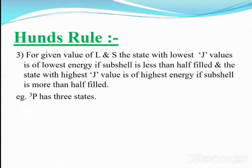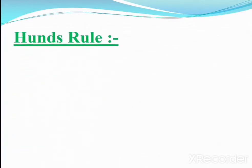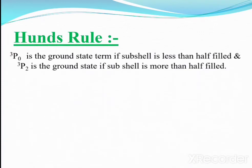For example, ³P has three states with L = 1, S = 1, and J values of 2, 1, and 0, giving terms ³P₂, ³P₁, and ³P₀. Here, ³P₀ is the ground state term when the sub-shell is less than half-filled, and ³P₂ is the ground state when the sub-shell is more than half-filled.